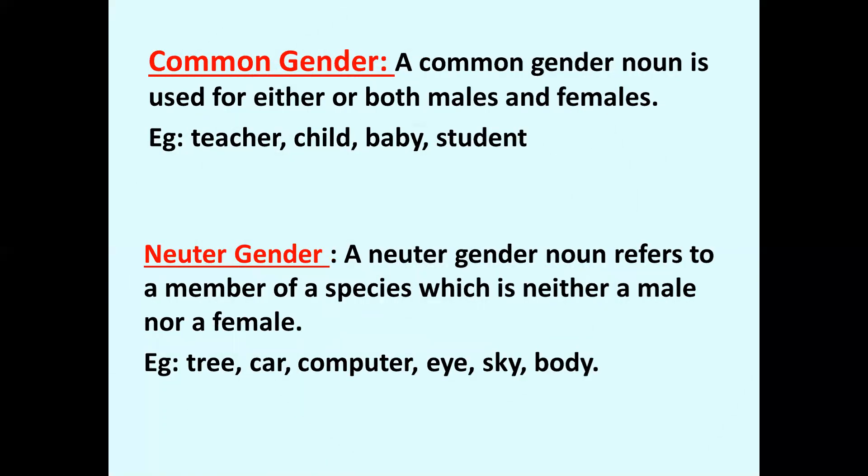Common gender: a common gender noun is used for either or both males and females — for example, teacher, child, baby, student. Neuter gender: a neuter gender noun refers to a member of a species which is neither male nor female — for example, tree, car, computer, eye, sky, body. These are the neuter genders.